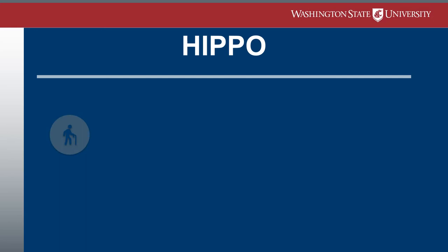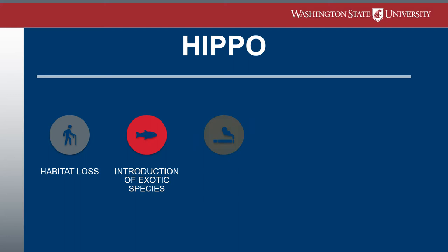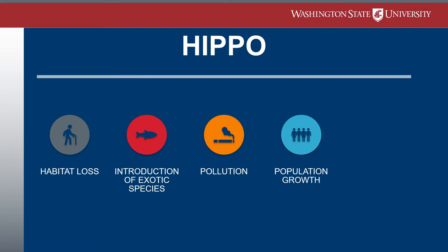He wrote that H is for habitat loss, including that caused by human-induced climate change. I is for invasive species — harmful aliens including predators, diseases, and competitors that displace native species. P is for pollution, the other P is for population — human overpopulation to be exact, a root cause of the other four factors. And O is for overharvesting, which is overuse from hunting, fishing, and gathering.